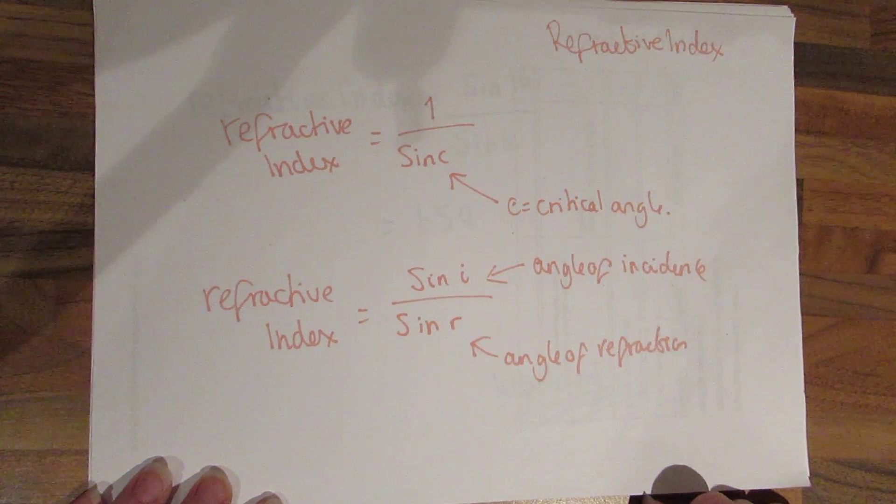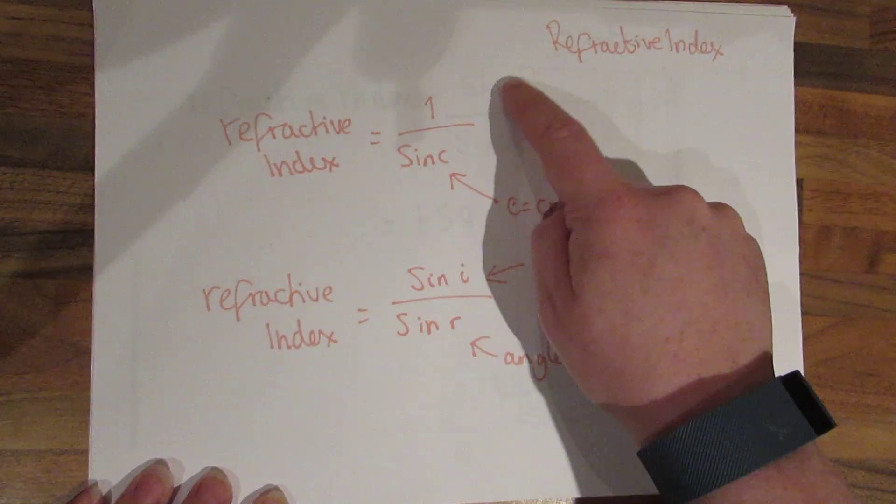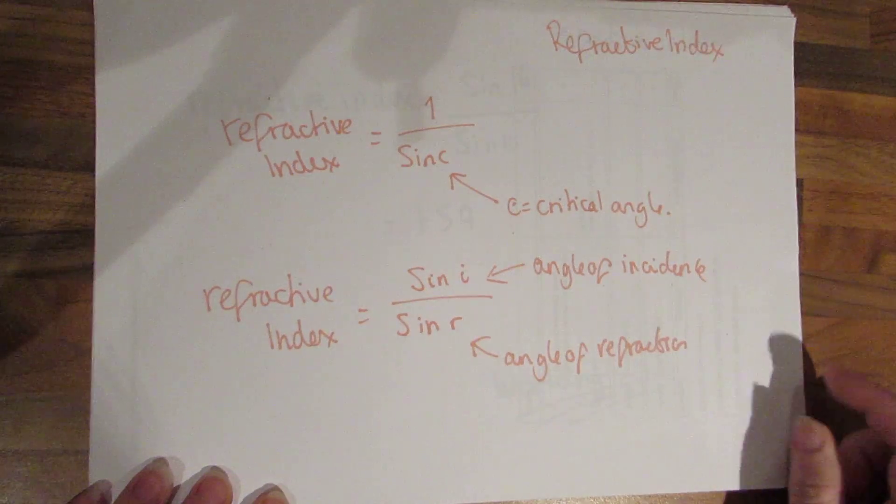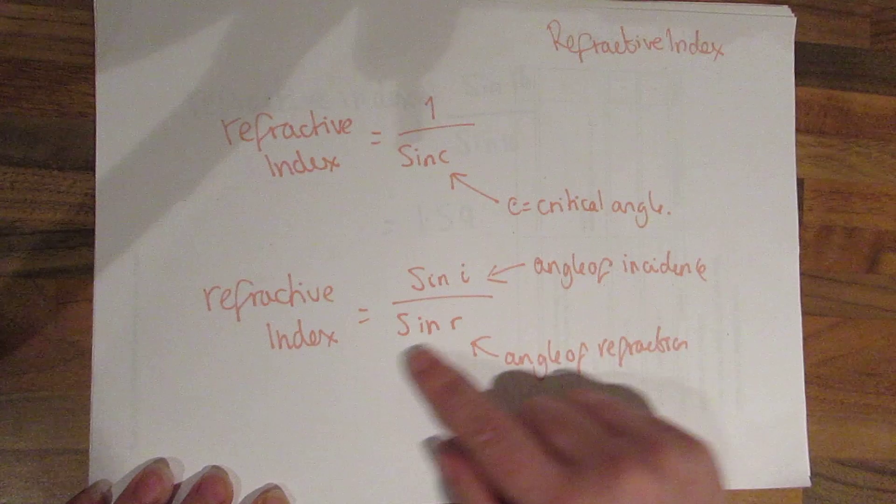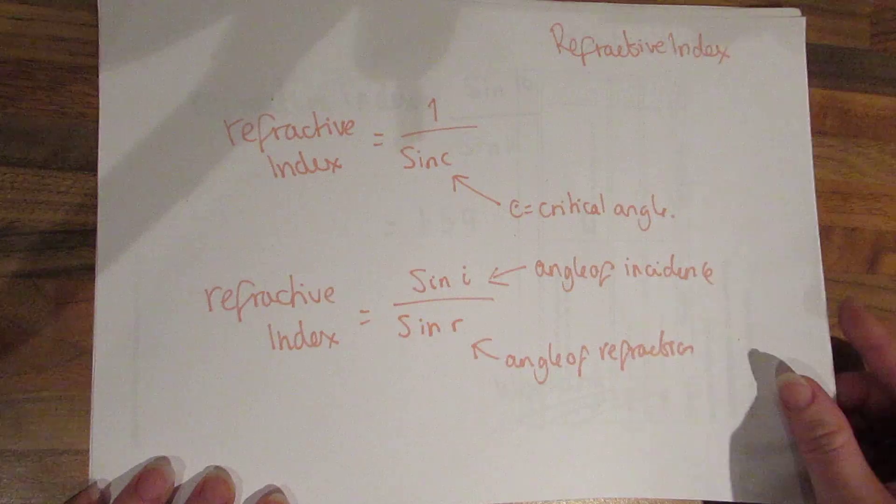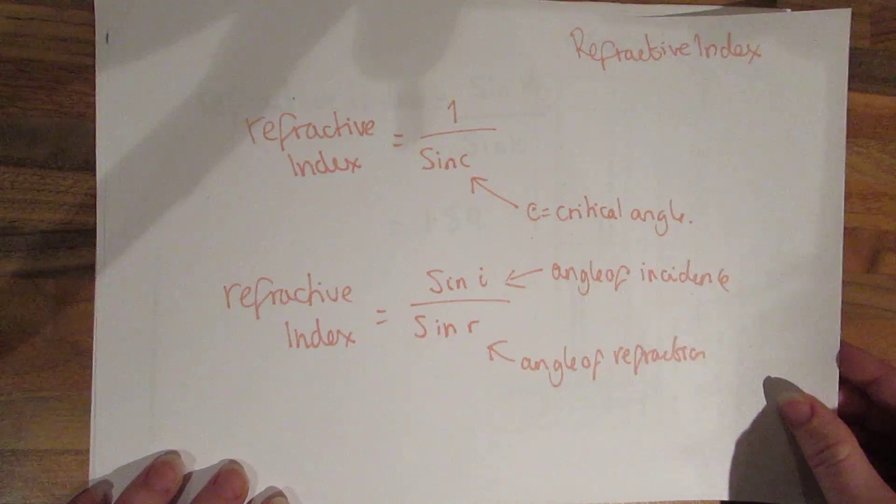There are two equations for refractive index. Refractive index is one over the sine of c, c being critical angle, or is the refractive index which is the sine of the angle of incidence divided by the sine of the angle of refraction.